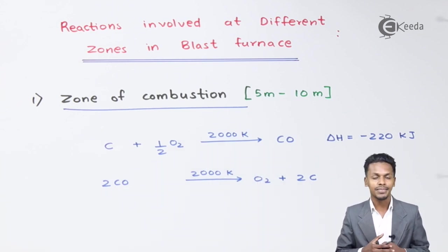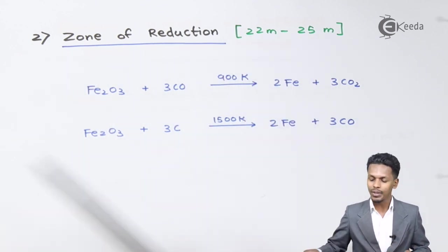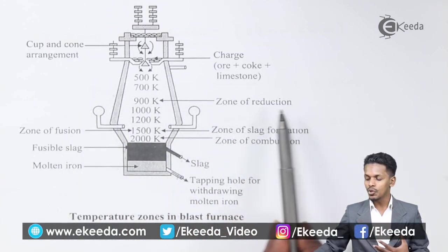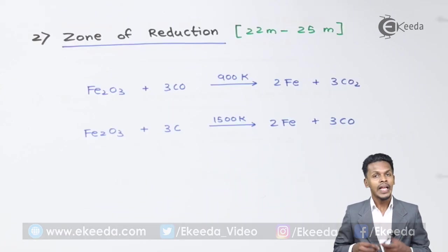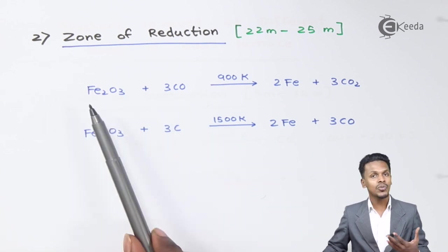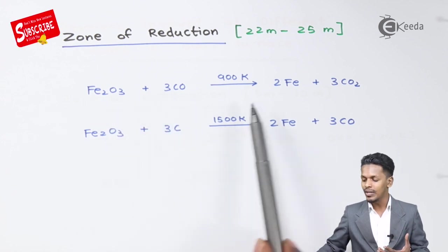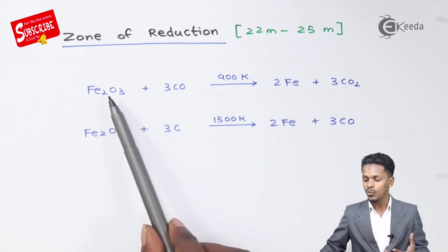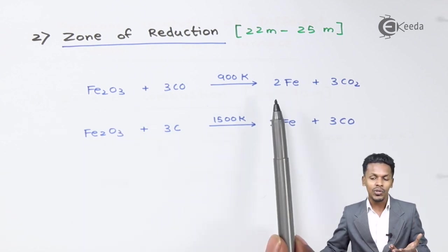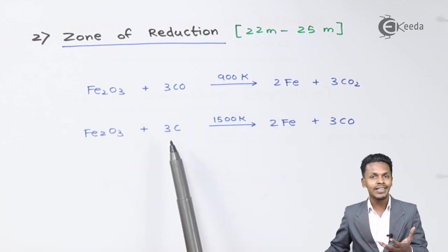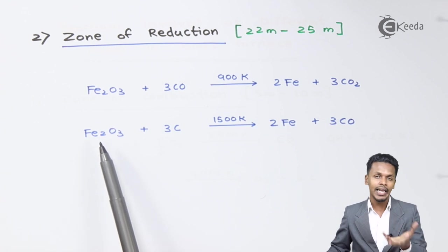The next zone is the zone of reduction, which occurs at 22 to 25 meters height from the bottom. Here, Fe2O3 reacts with 3 moles of CO at a temperature of around 900 Kelvin to convert Fe2O3 into Fe along with 3 moles of CO2.